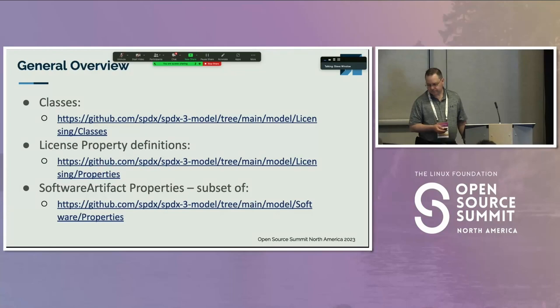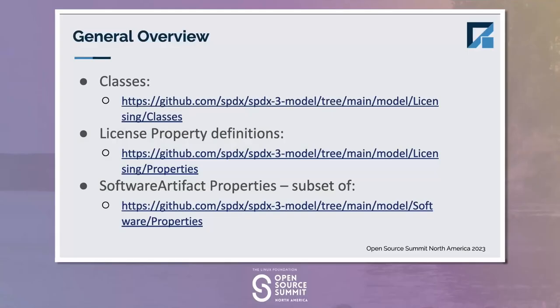You'll find the link for the definitions of the different properties for licenses. And then, because these are properties defined to be tied to files, packages, or snippets — the properties themselves for concluded licenses, declared licenses, and so on — these are currently stored in the software artifact subset in the software profile. So we'll touch on that in a bit.